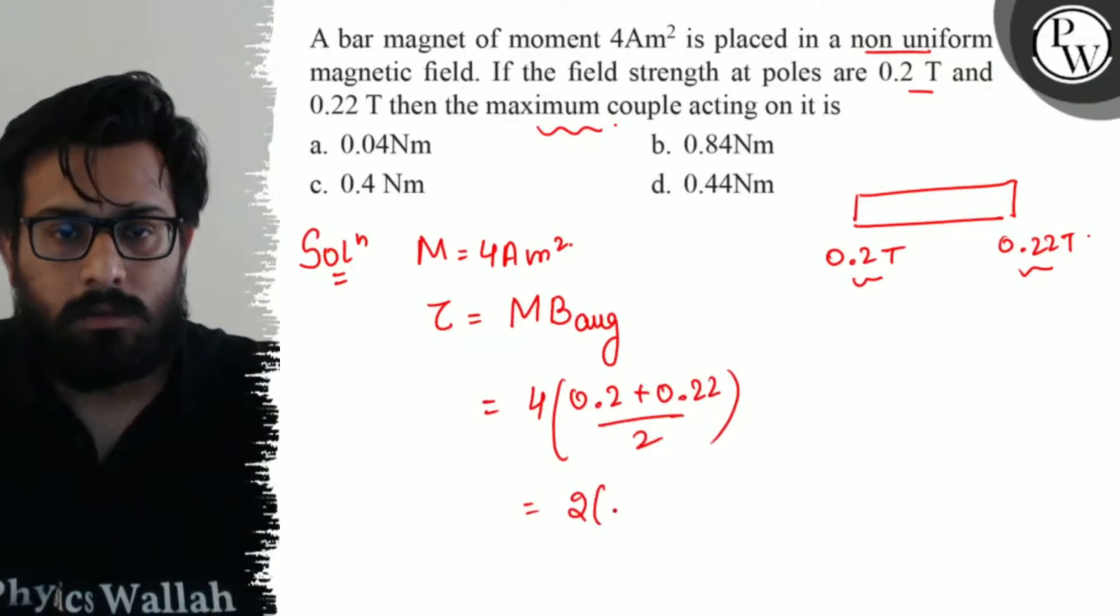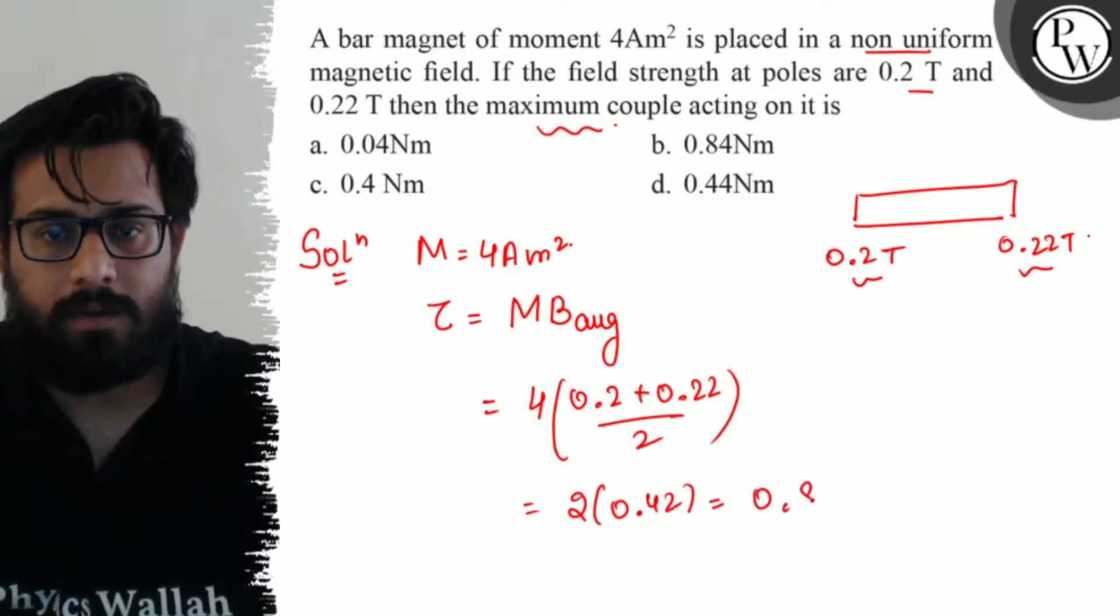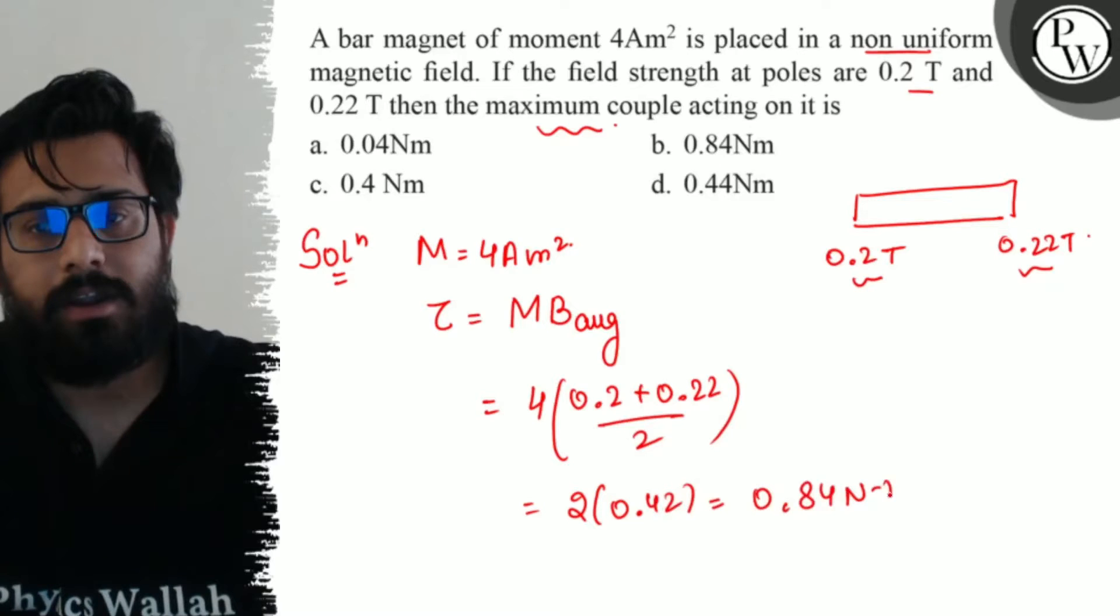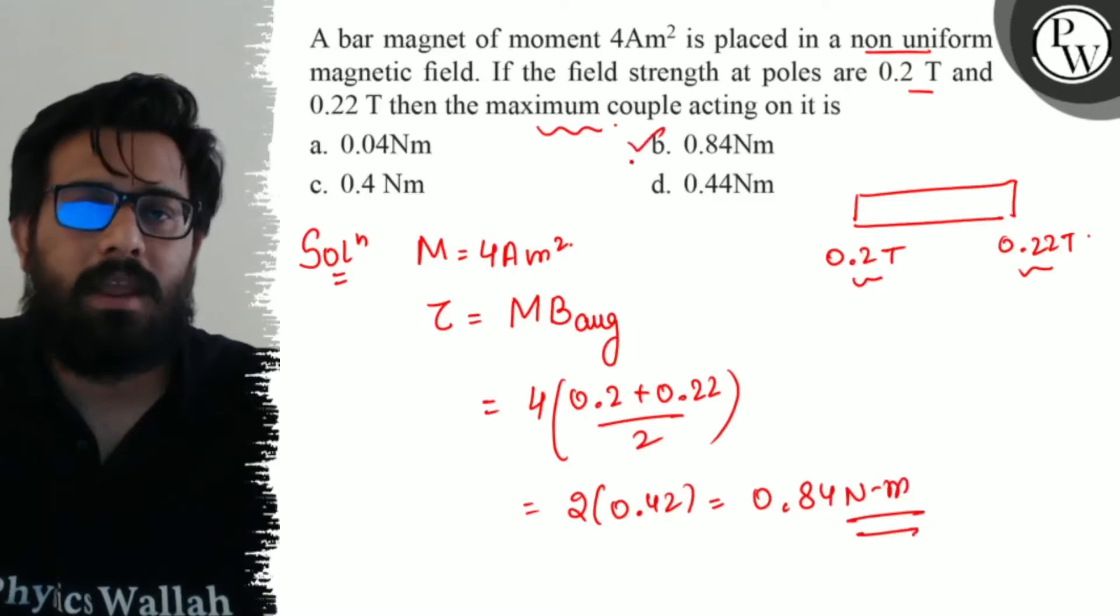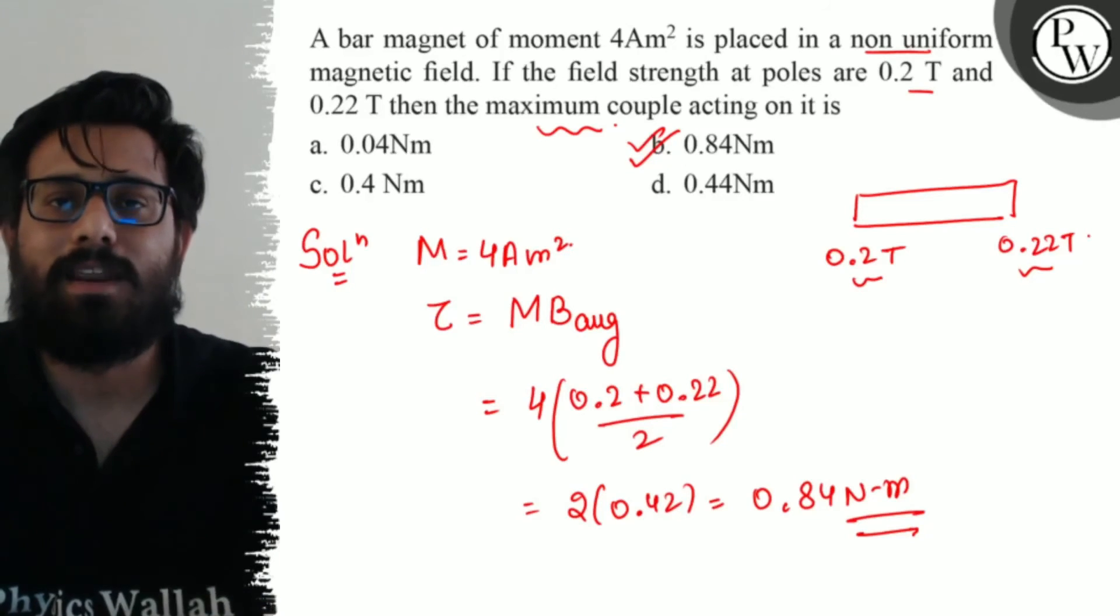This comes to be 2 × 0.42. Solving it further, 0.84 Newton-meter is your final answer. So option B is absolutely correct. I hope you get the concept of this question. All the very best!